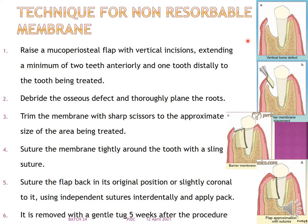For the non-resorbable membrane technique: raise a mucoperiosteal flap with a vertical incision extending at least two teeth anteriorly and one tooth distally to the tooth being treated. Debride the osseous defects and thoroughly plane the roots. Trim the membrane to the size of the area being treated, place the membrane and suture it tightly around the tooth with a sling suture, reposition the flap coronally using independent sutures, and apply the pack. The membrane can be removed after 5 weeks.